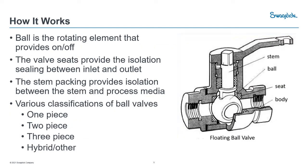How does it work? The ball is a rotating element that drives the on-off. This cutaway shows it technically in the off direction. When the ball is 90 degrees to flow, it's in the off position. The valve seats provide isolation and sealing between the inlet and outlet side. There's a ring-shaped seat, which is pretty common, and that seating material seals the ball. It's straightforward and easy to get a really good seal because everything is circular.